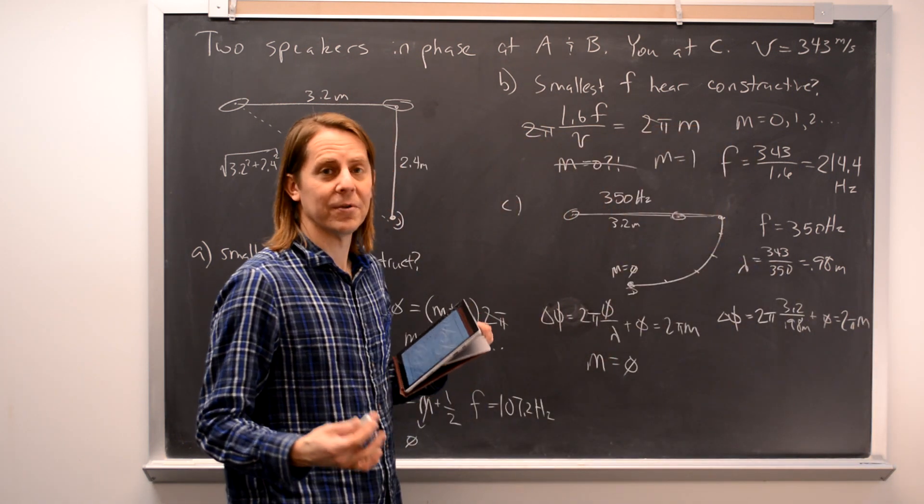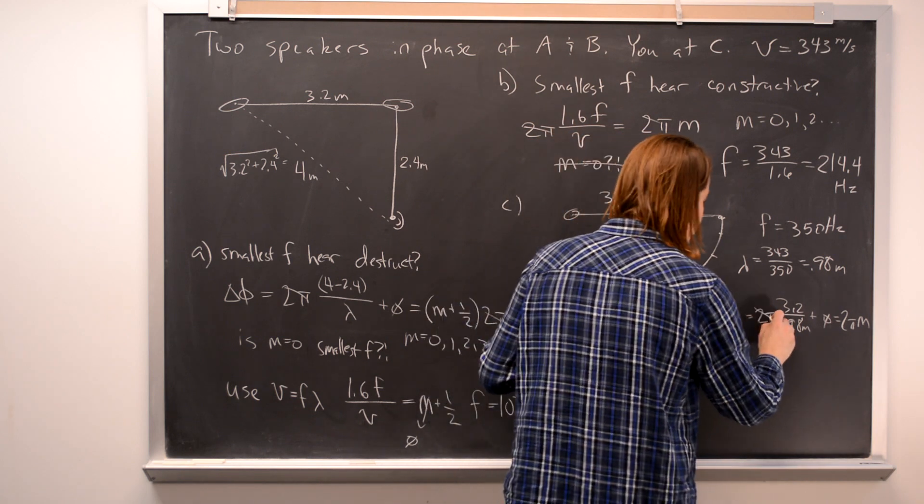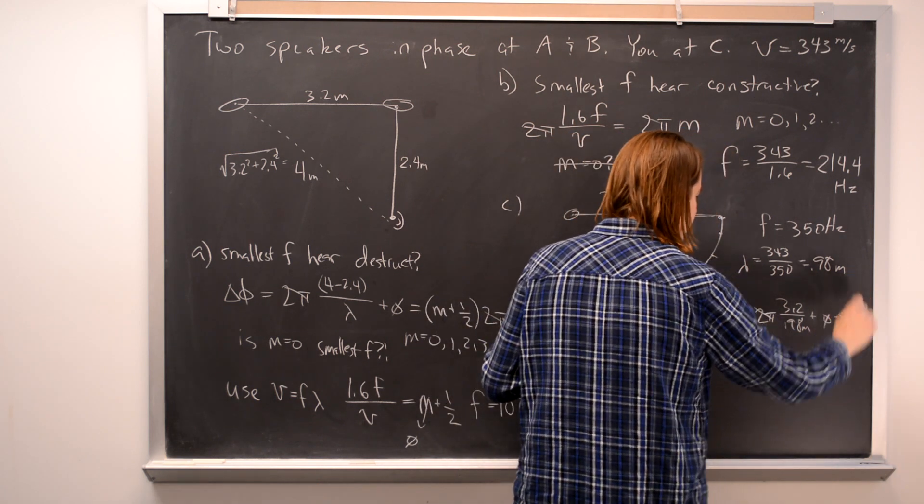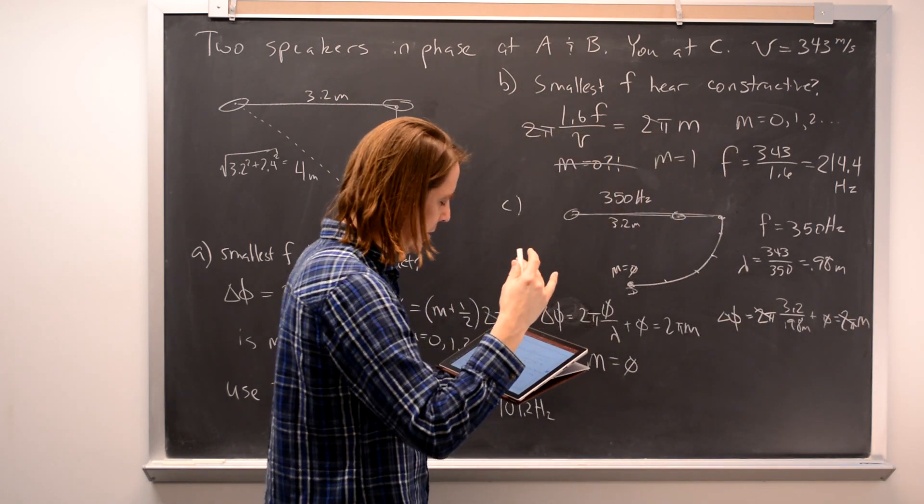3.2 meters over 0.98 meters. That's the wavelength. Plus no phase difference, 0, equals 2π M. So we can see what order of constructive interference is that. Solve for M. And for M, you get 3.26.